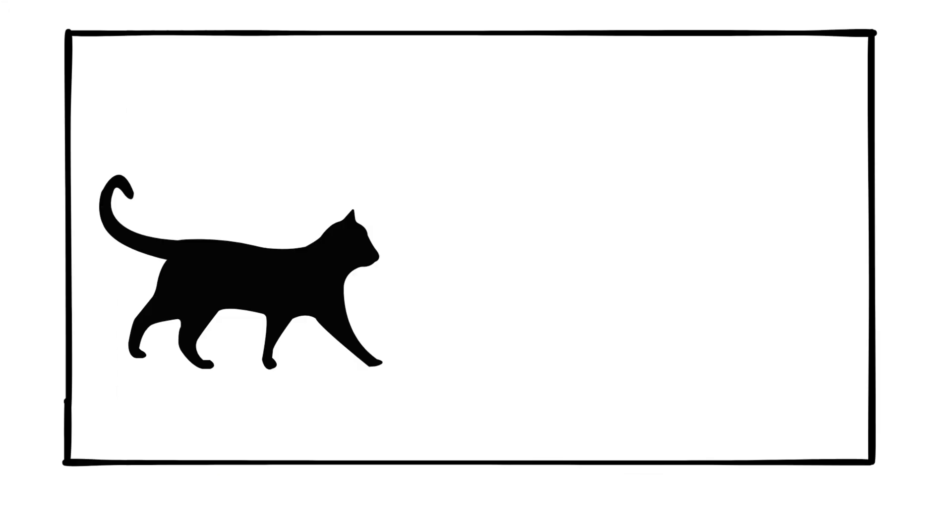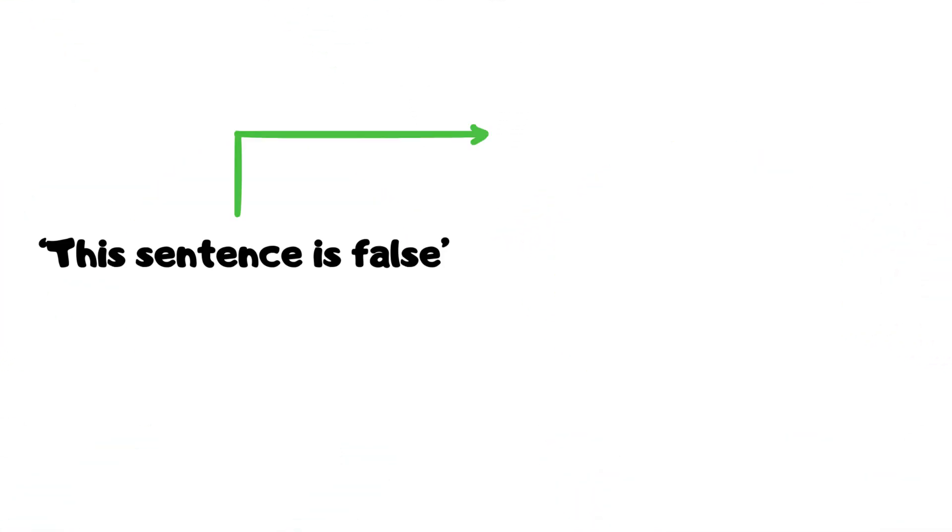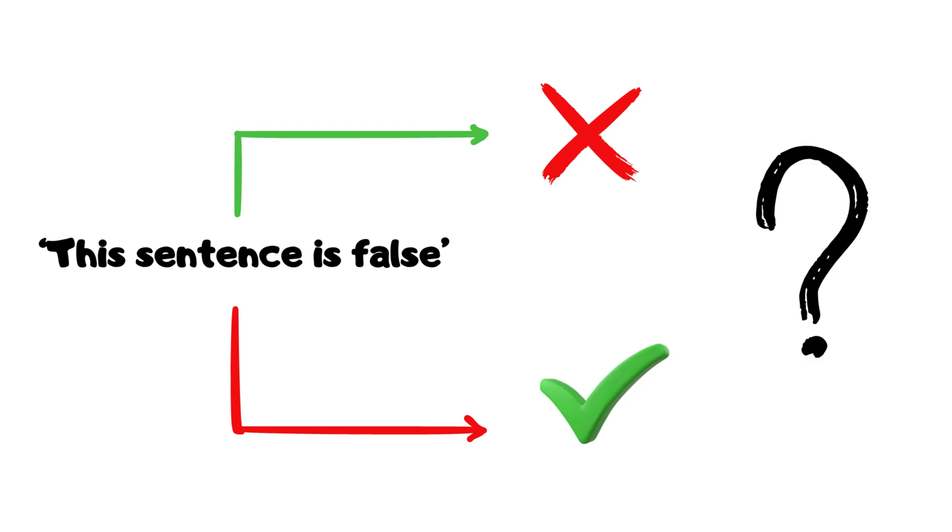Schrodinger's cat. A cat trapped in a box can be dead and alive at the same time. Liar paradox. The statement 'this sentence is false' is false if true and true if false.